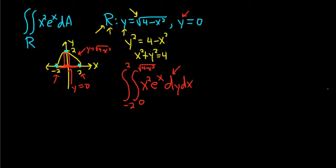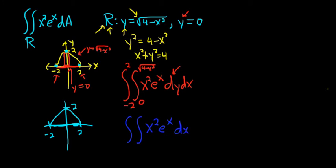So that's the first integral. Let's do the second one. I'm going to redraw the picture. So here's 2, here's negative 2, here's 2. And there's our circle, the top half of our circle. And here's y equals 0. And we're going to do dx dy this time. So we have x-squared, e to the x, dx dy.